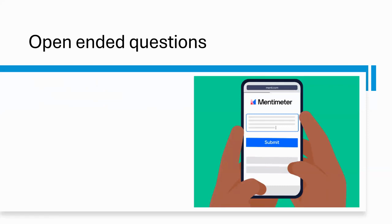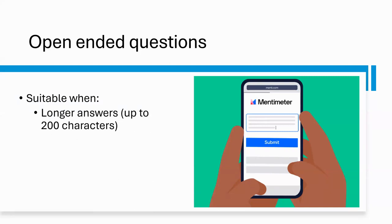Next, we have open-ended questions — another commonly used slide. This question type is suitable when you don't want to use predefined answers and want voters to write something longer, up to 200 characters. Participants can type in free text answers. I personally use it as a post-course evaluation from participants.